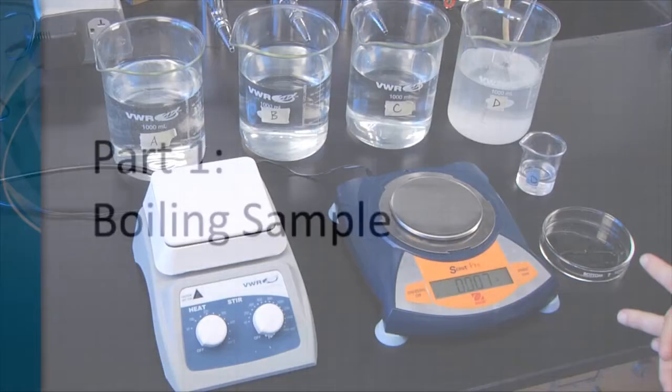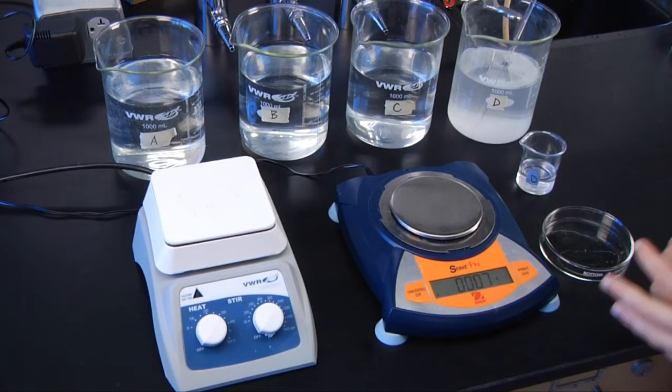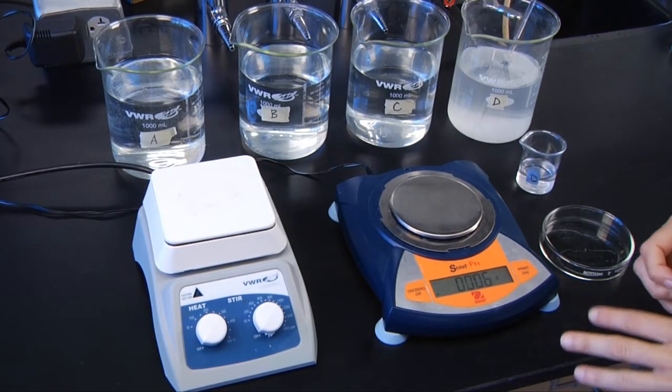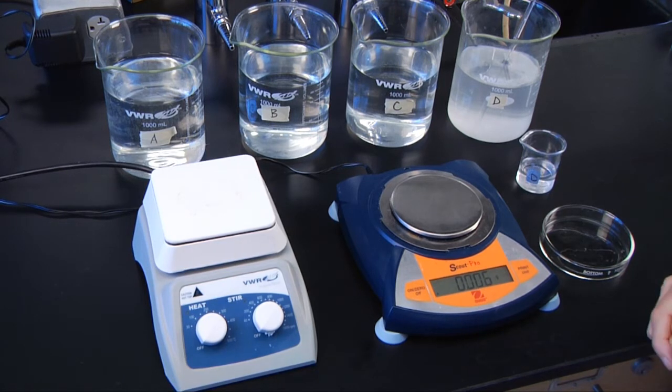In the first method you're going to do kind of the old school way and you're going to take one sample and boil it down. So you or your group is going to be in charge of one of the assigned letters that I've given you. You're not going to do all four of them, you're only going to do one. The reason for this is because it can be a little time consuming. So for the first portion of this lab you're going to be boiling a sample down to figure out the salinity of that sample.